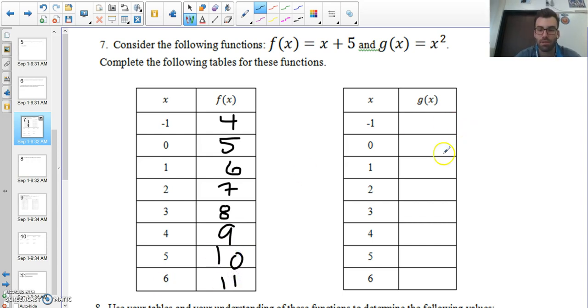Same thing over here. Let's fill out for g of x. I plug in negative one to x squared, I get one, zero, one, four, nine. Let's make that four. Help me. Let's try that again. A four, a nine, sixteen, twenty-five, thirty-six.